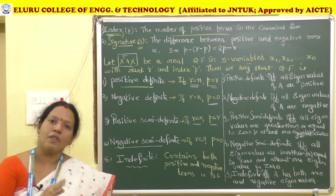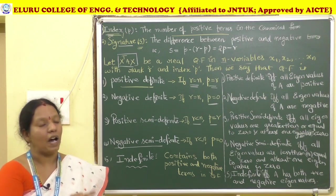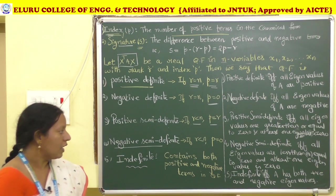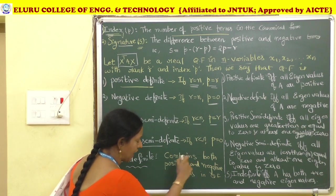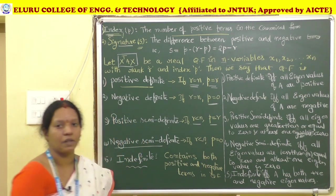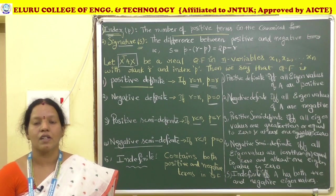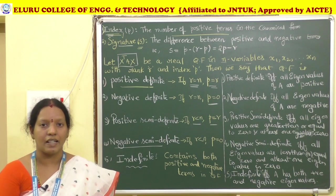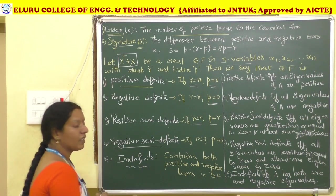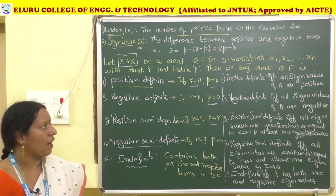The last case is indefinite. If the given quadratic form, after reducing into canonical form, contains both positive and negative terms, then the given quadratic form is indefinite.